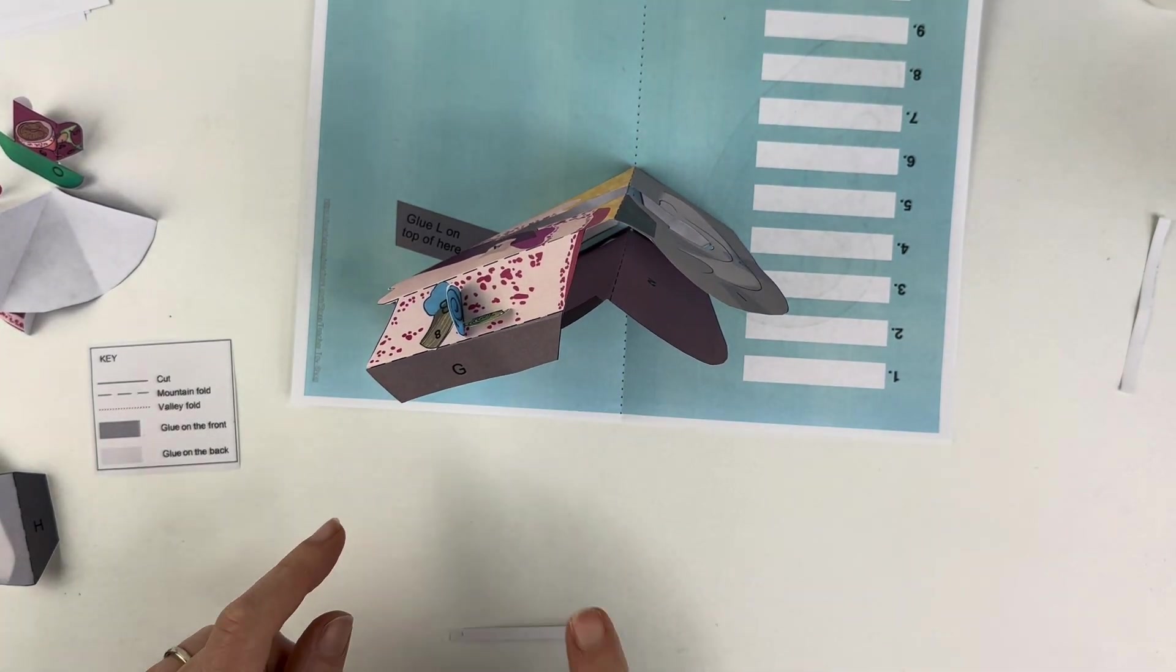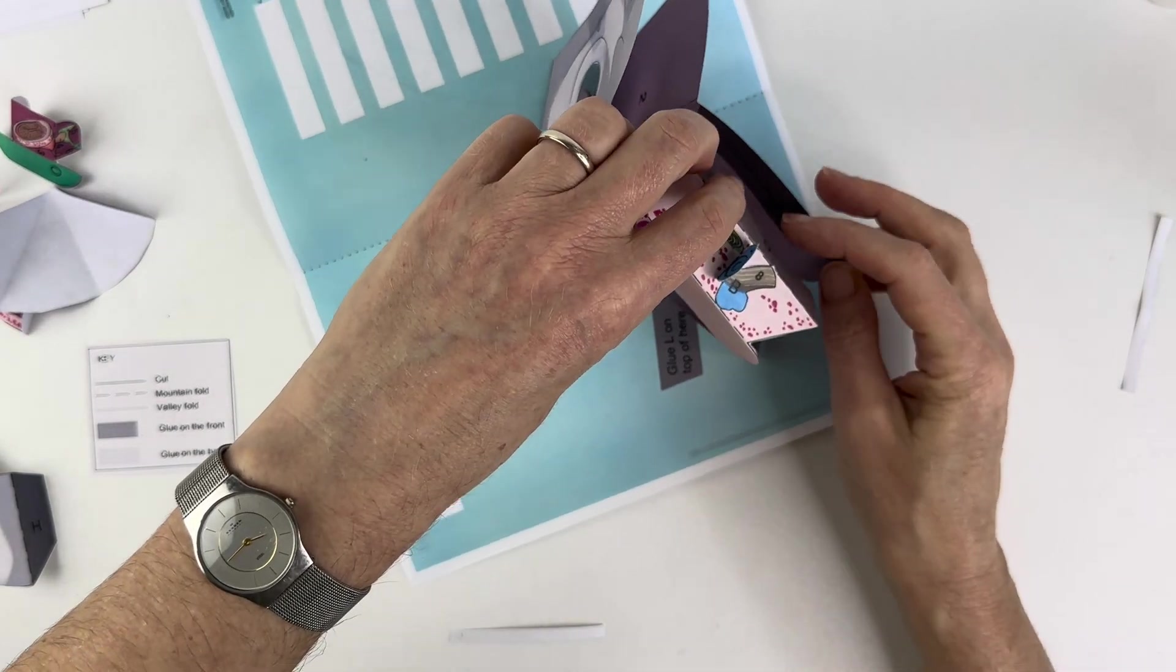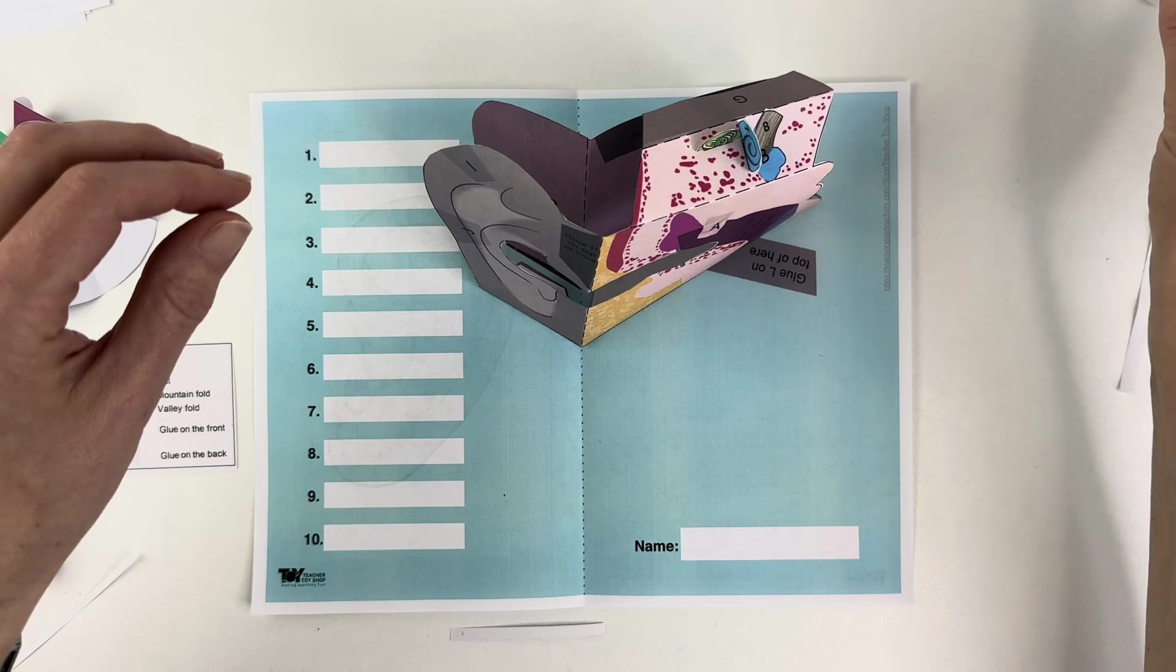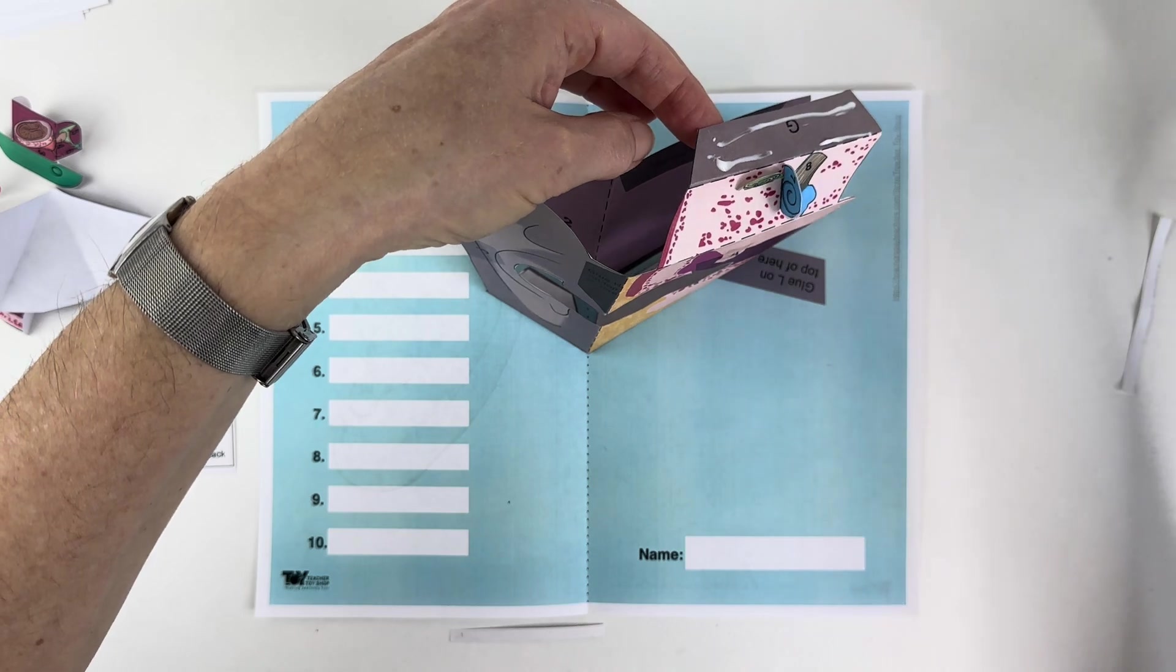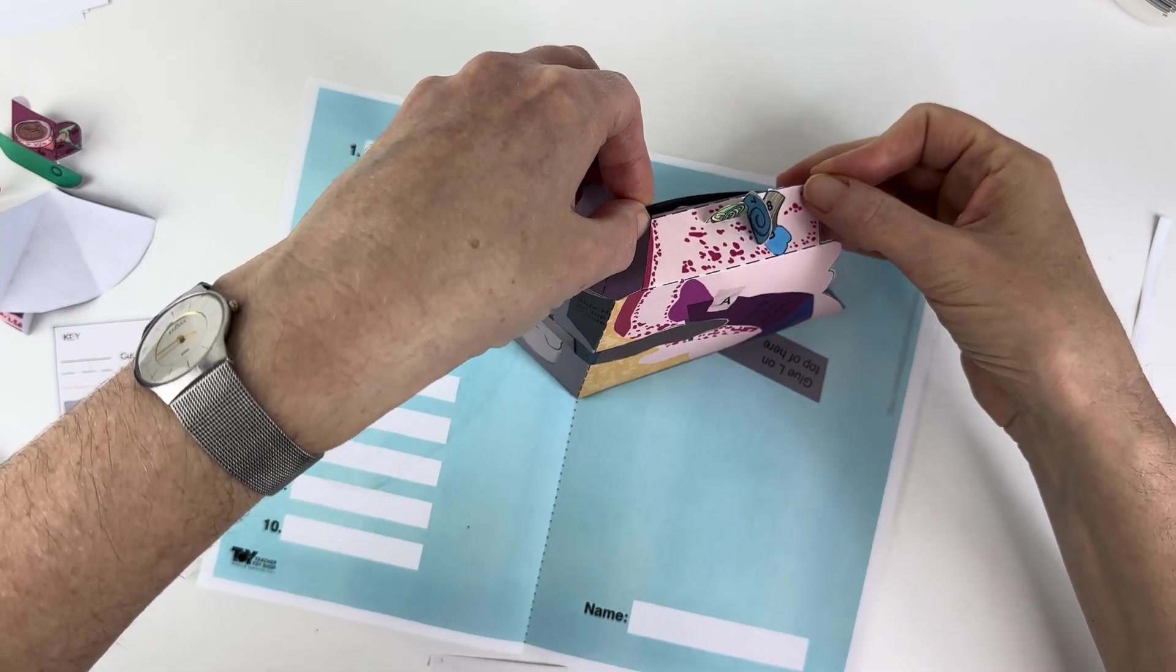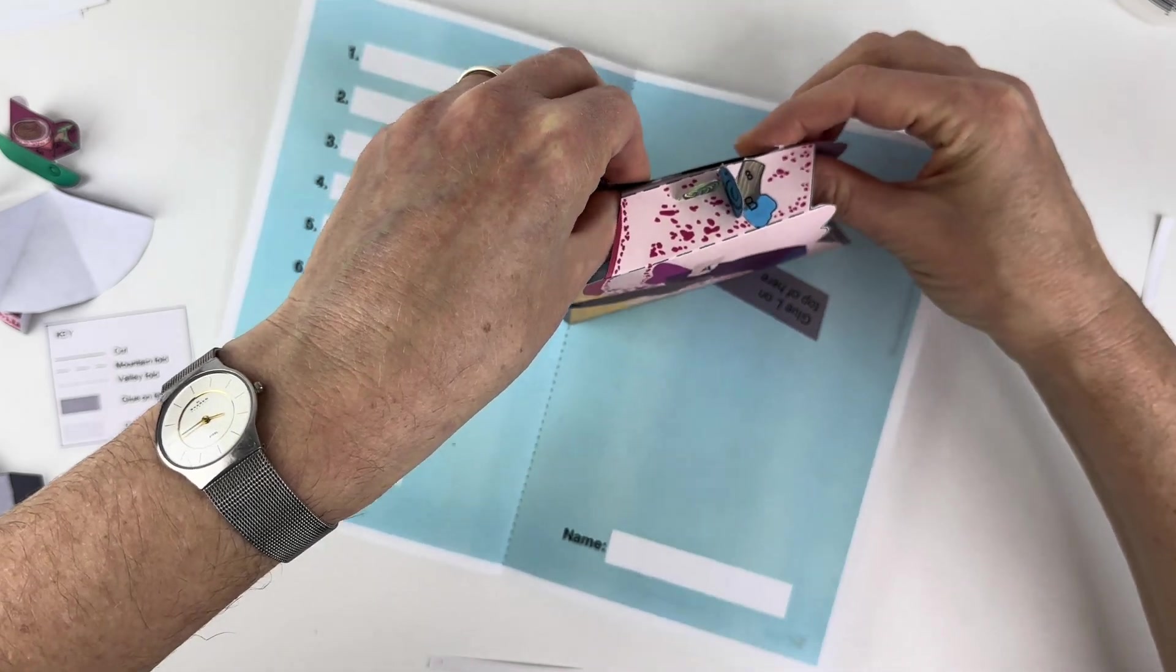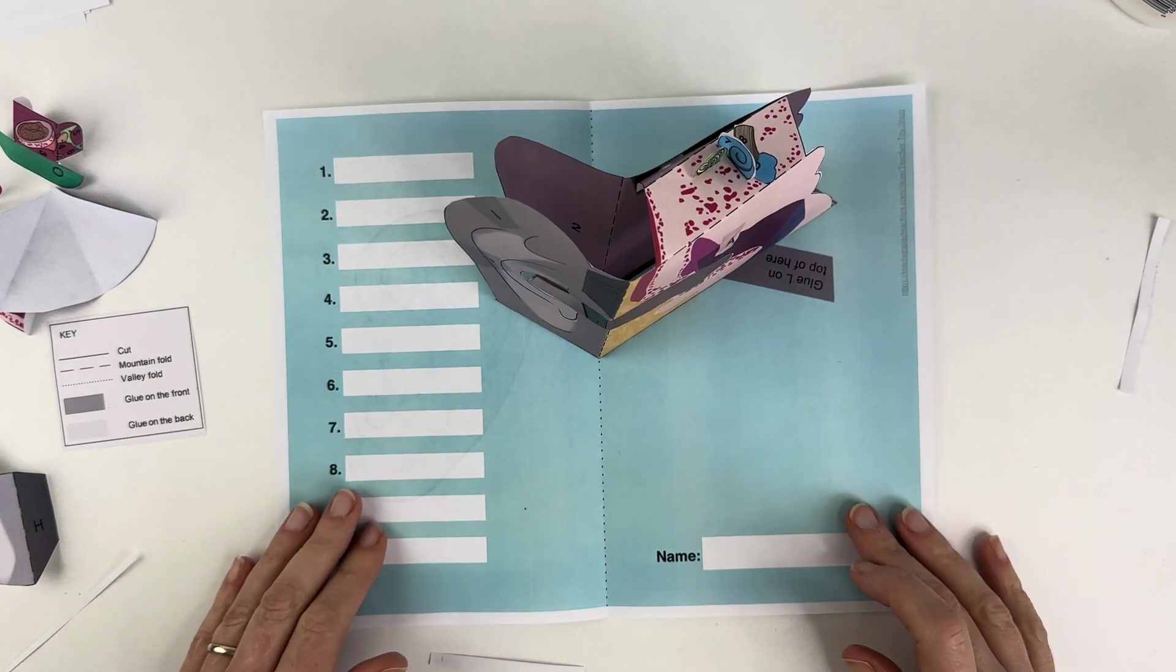Okay and then the last part of this section you'll notice this G here and I'll turn it around so you can see that it says glue face to face with G right there, so that's what I'm going to do. Just like so, so now we have our ears kind of standing up and looking a little bit more complete right there.